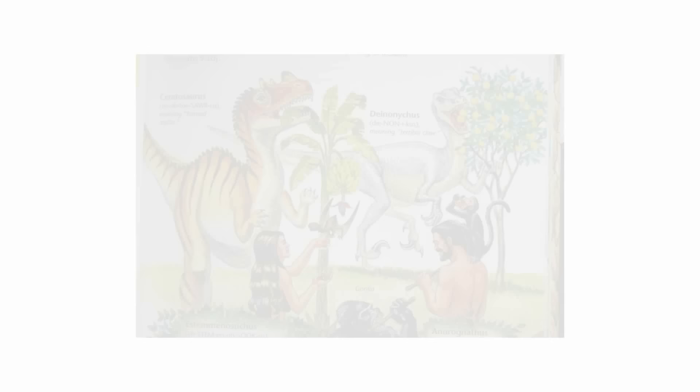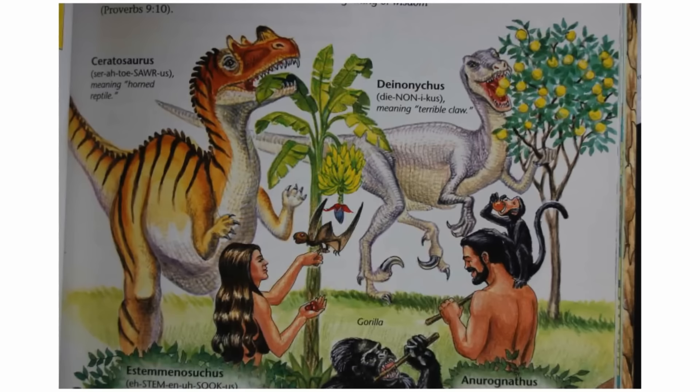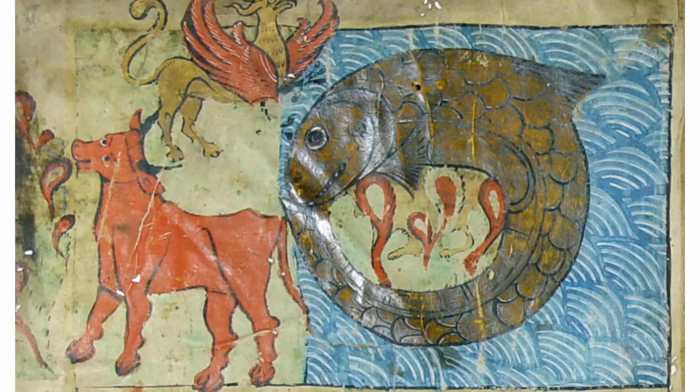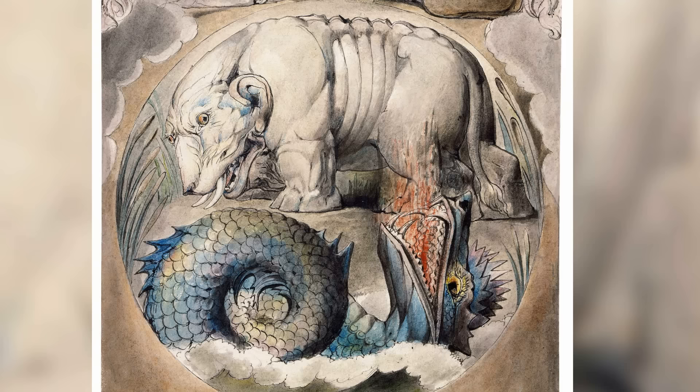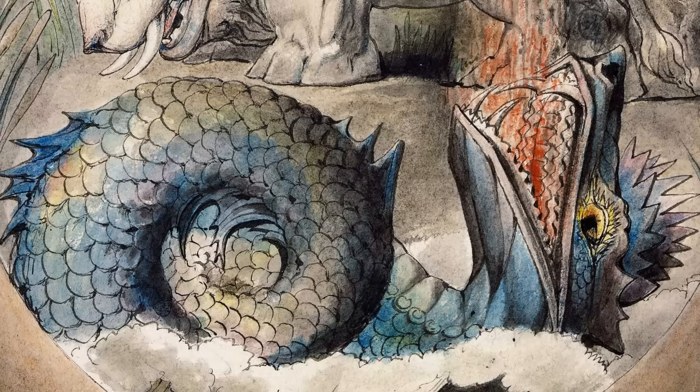A popular claim made by young earth creationists and other people who believe humans and dinosaurs coexisted is the description in the book of Job in the Hebrew Bible of two creatures — Leviathan and Behemoth. They suggest that the description of both of these creatures are eyewitness accounts of actual animals, most likely extinct reptiles like dinosaurs, mosasaurs, plesiosaurs, etc., and thus dispute the scientific model that humans did not co-exist with such animals. In this video, we will be focusing on the creature Leviathan first, and try to figure out the answer to the question: what is Leviathan, exactly?